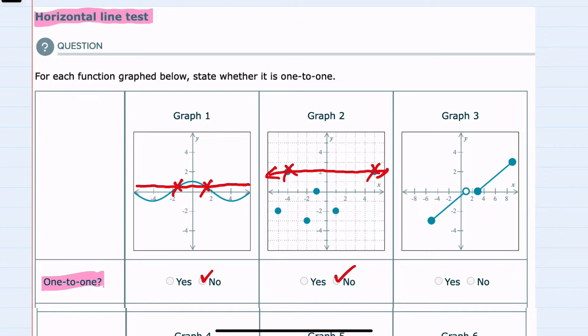For graph three, I could draw a horizontal line in several places where it only crosses once. Again, even here it'll only cross once. But I can't draw a horizontal line that crosses more than once. So yes, graph three is one-to-one.